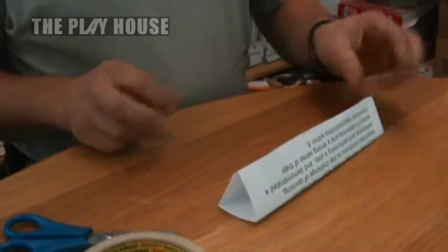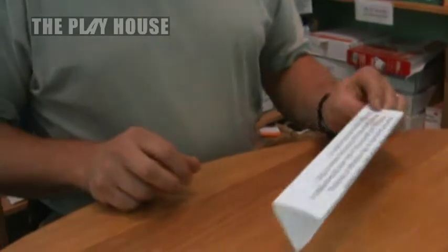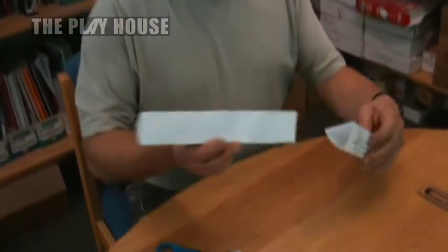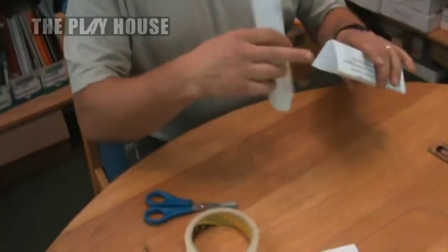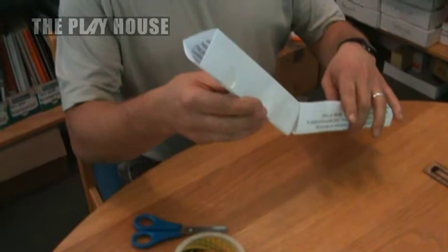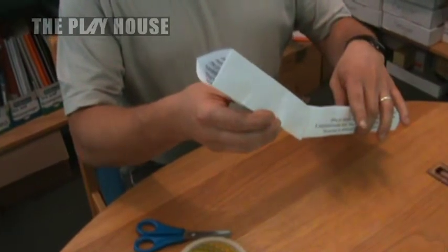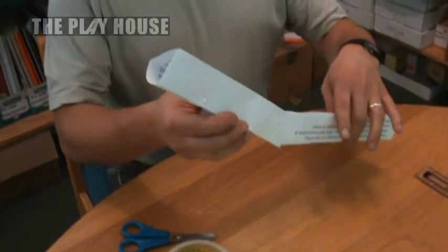So there is your basic tube. When you put it together with other tubes, you can join them together. A marble will fit down there. You can stick them together with tape to make a longer run.